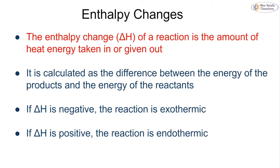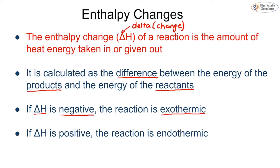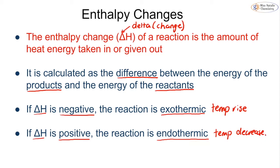We also have enthalpy changes, which is determined as delta H. This is not a triangle — it is the Greek letter delta, and it simply means change. H is our enthalpy and delta tells us our change. This is the amount of heat energy that is taken in or given out for any reaction, calculated by the difference in energy between the products and the reactants. If delta H is negative, the reaction is exothermic. If delta H is positive, the reaction is endothermic.